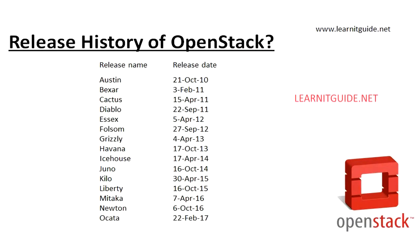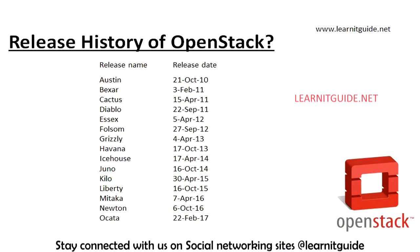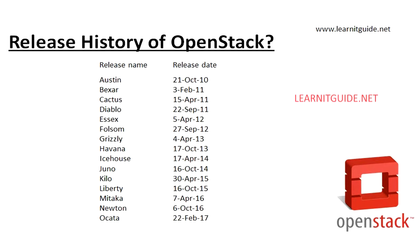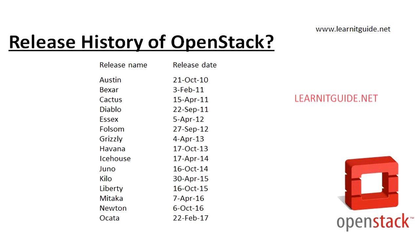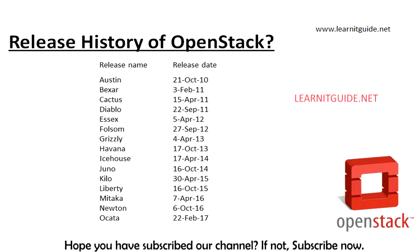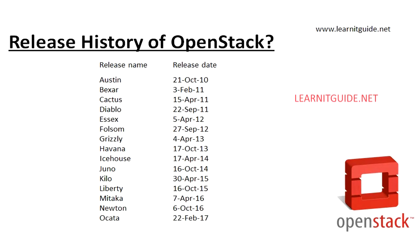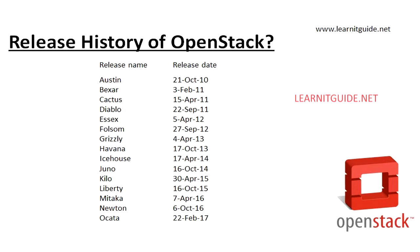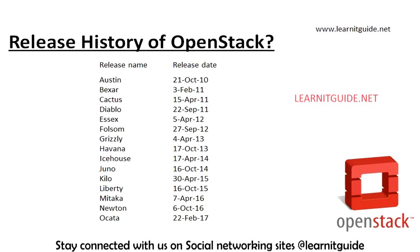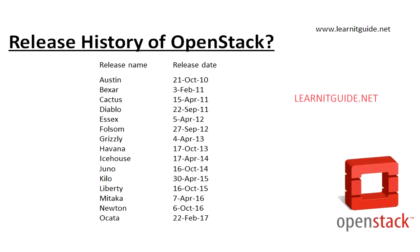OpenStack releases new versions every 6 months with newly developed components. Since 2010, they have released many versions, from Austin to Ocata, which was released on 22 February 2017. All release names start in alphabetical order. The recently released version is Ocata, released on 22 February 2017.